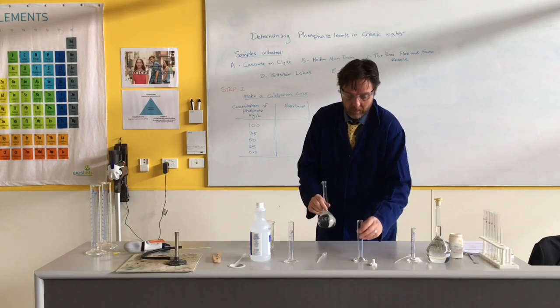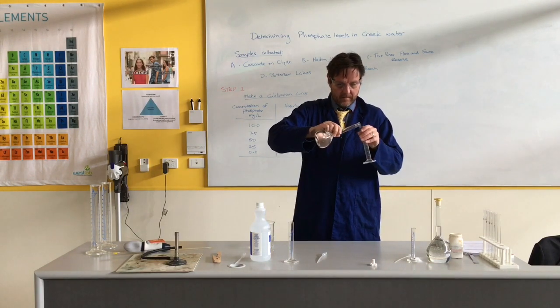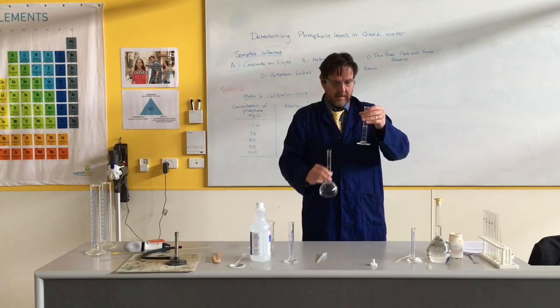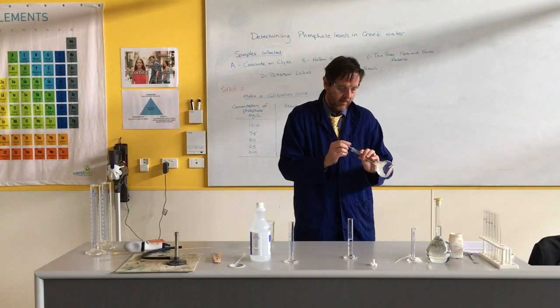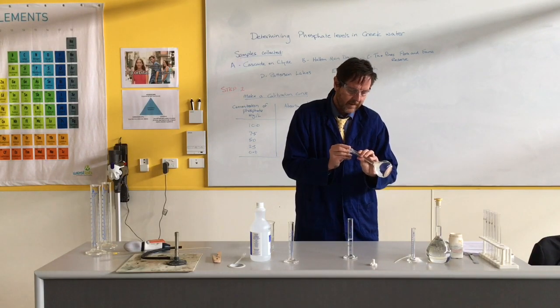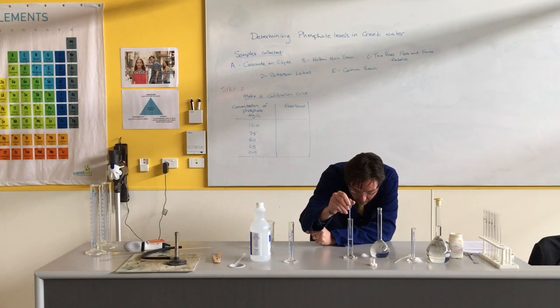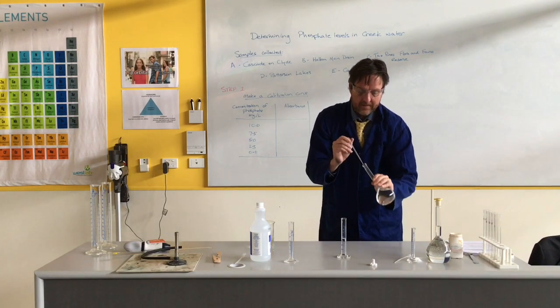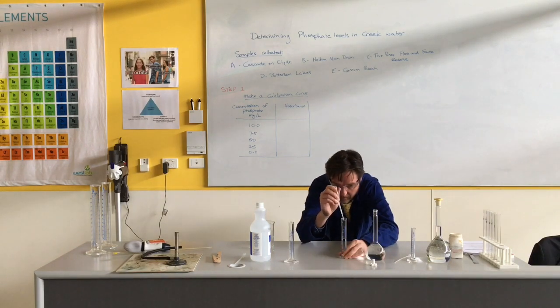To do that, I am going to pour as accurately as I can 20 mils of this. So here we go, 20 mils. A little bit short, which is what I wanted, and I'm going to now just get the last little bits out with the dropping pipette to get me right where I want to get to, and I'm going to see if I can get my head down right low so that I can see the meniscus.